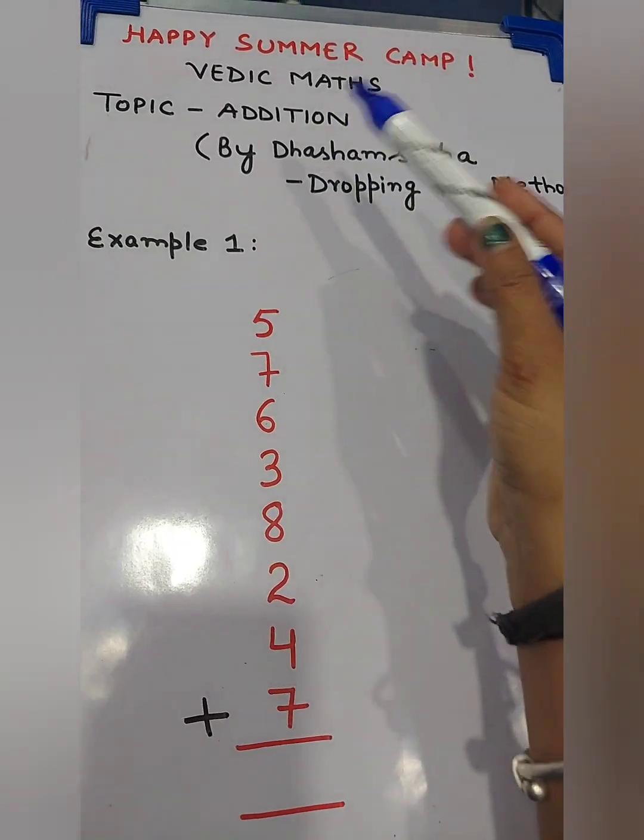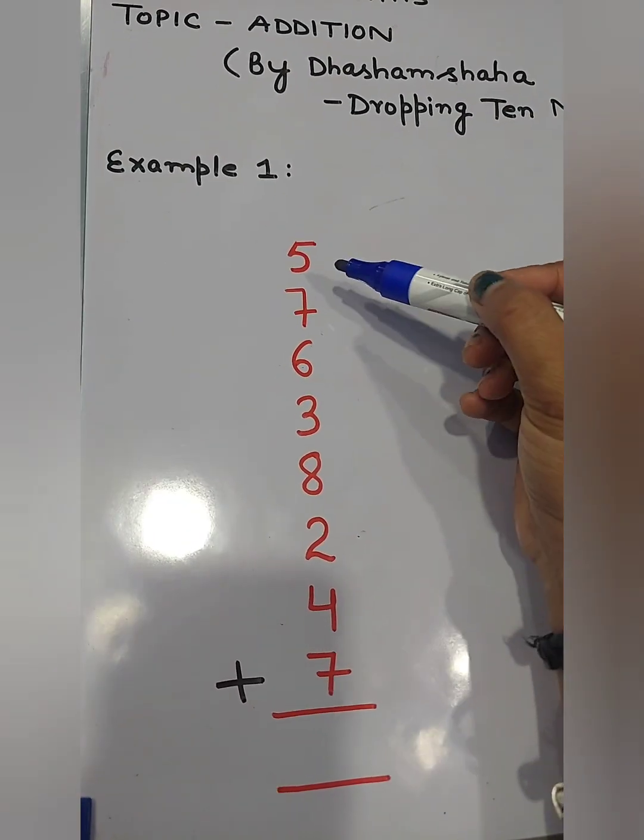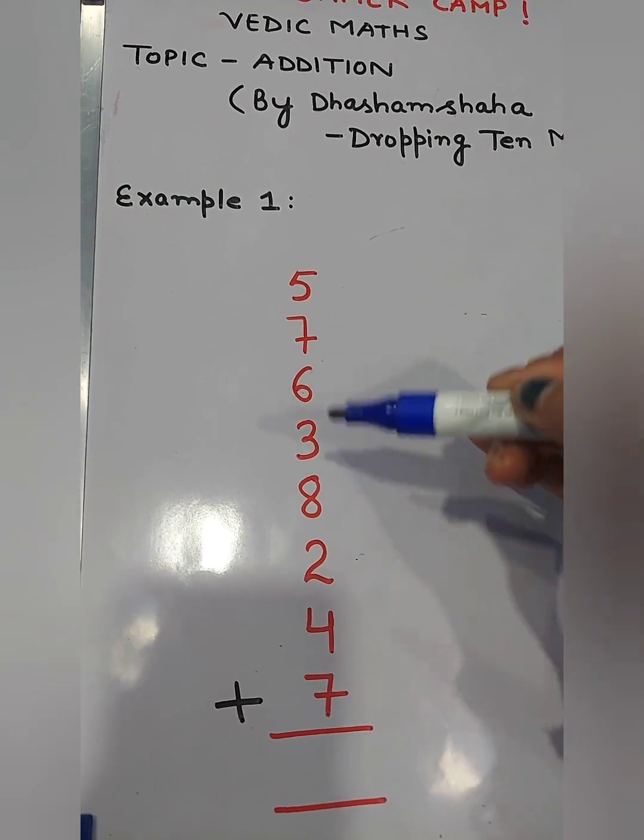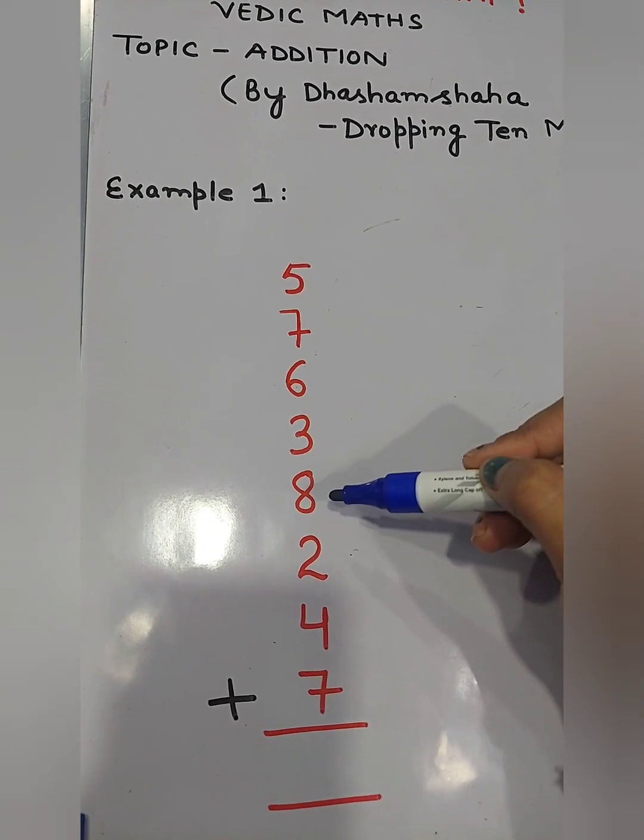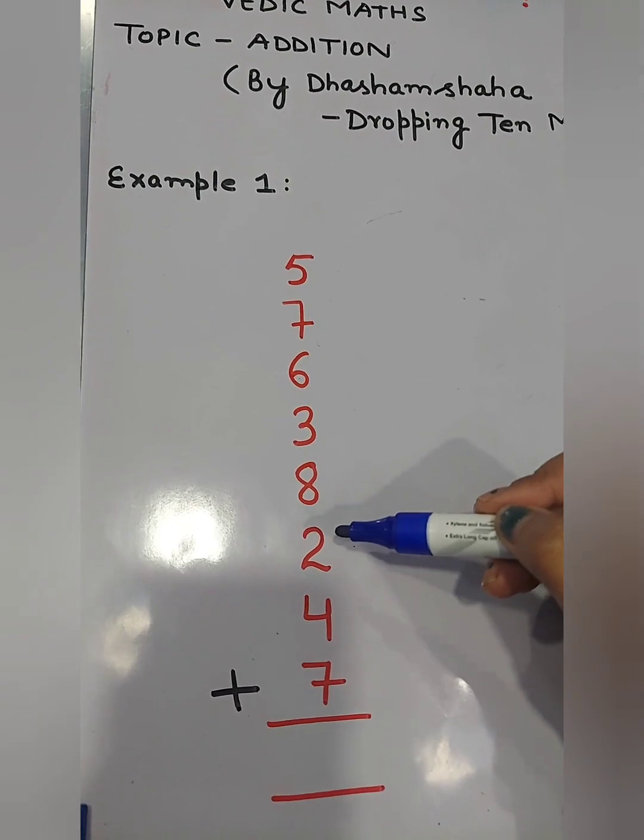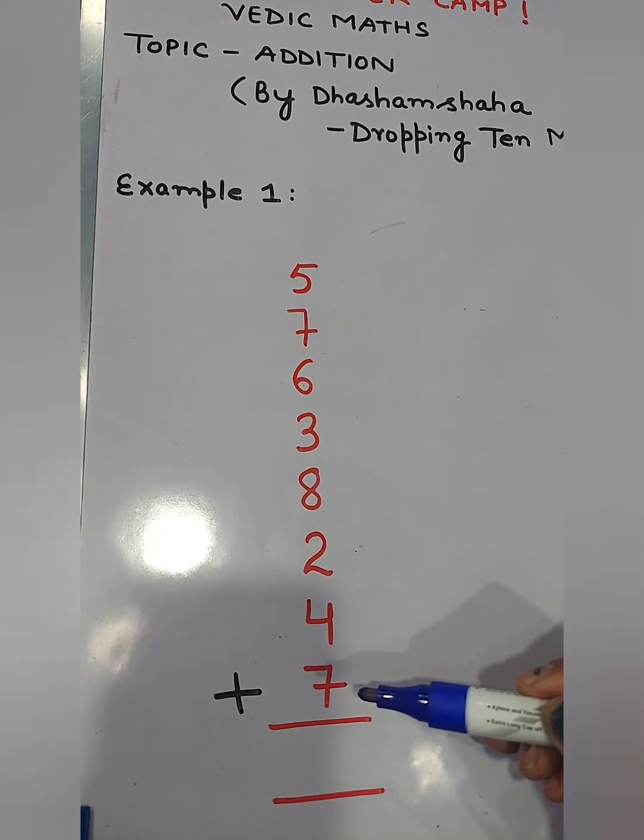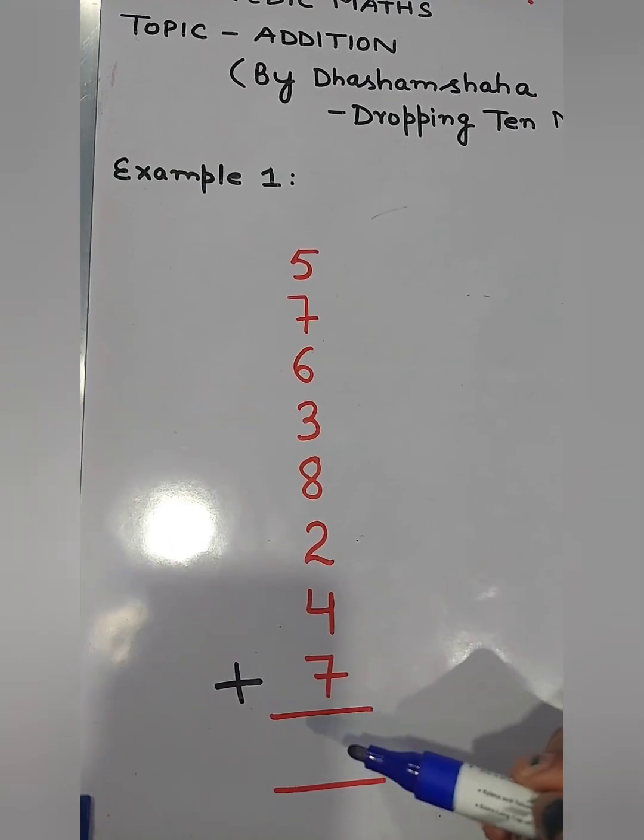How to add these numbers in Vedic Mathematics. Normally we will start from here. 5 plus 7 is 12, 12 plus 6 is 18, 18 plus 3 is 21, 21 plus 8 is 29, 29 plus 2 is 31, 31 plus 4 is 35 and 35 plus 7 is 42. Our answer is 42.